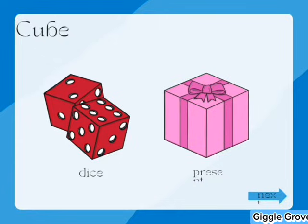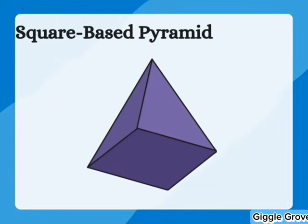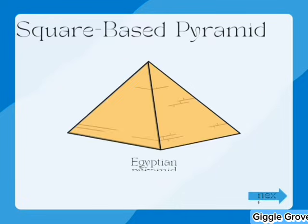A square-based pyramid has a square base and four triangular faces that meet at a single point called the apex.